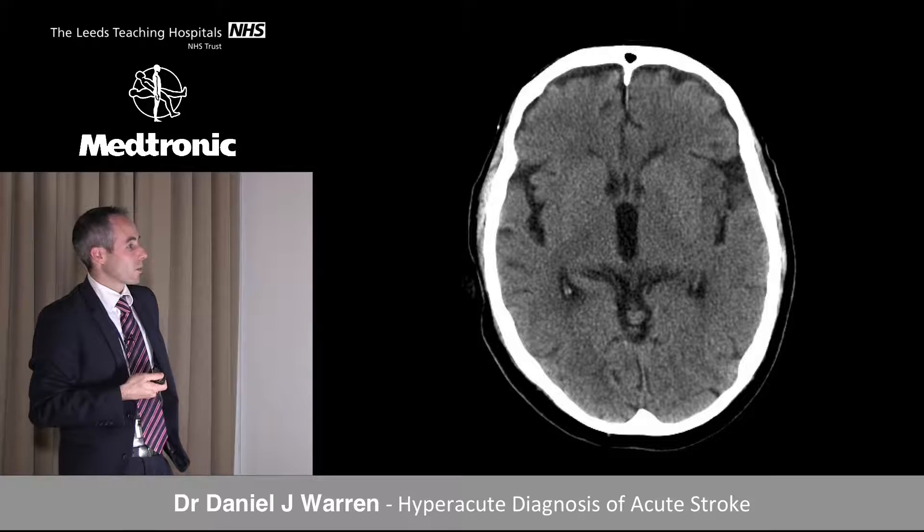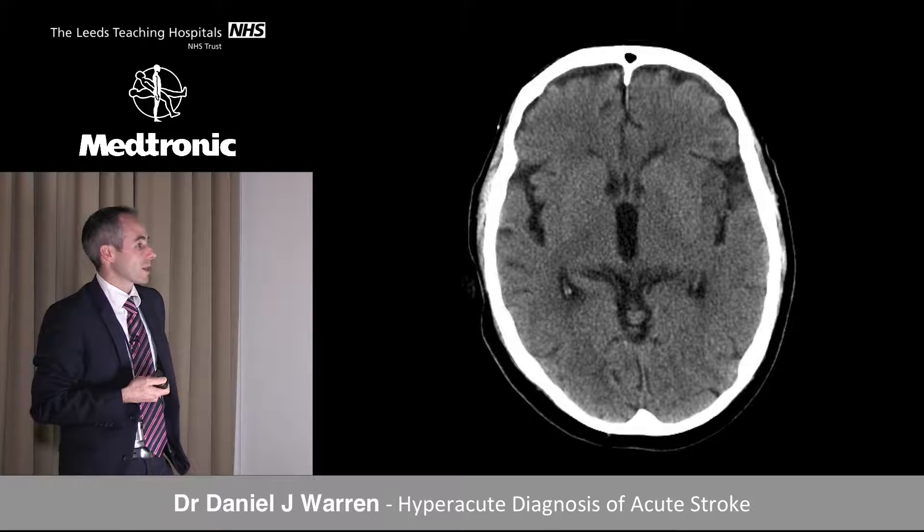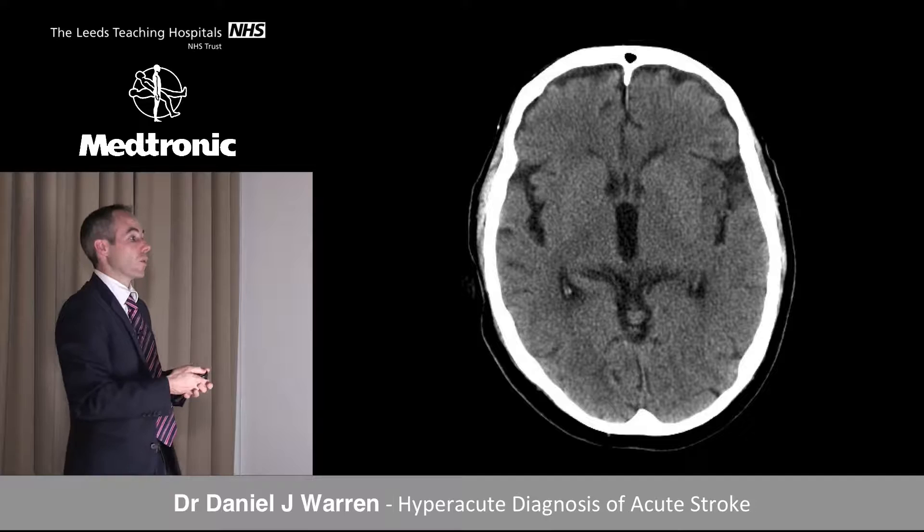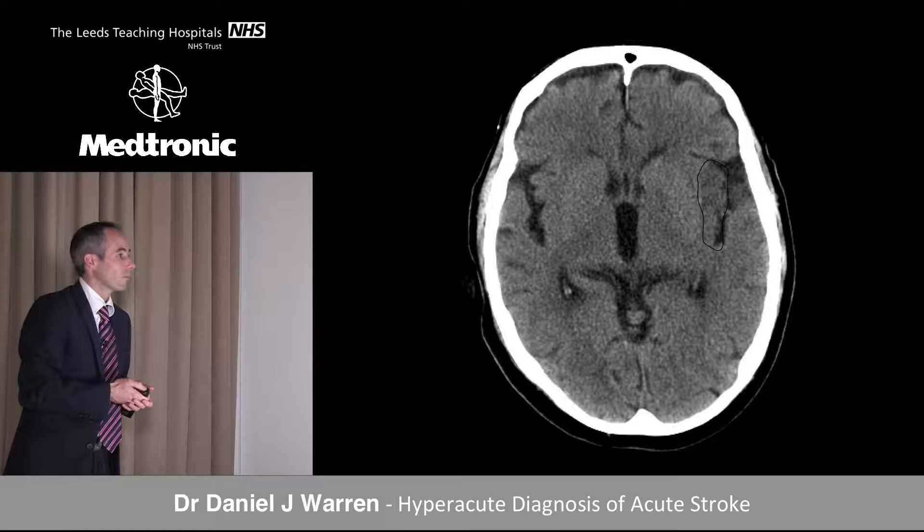Here we can see the caudate and the lenticular nucleus. Coming laterally we reach the insular cortex. The good thing about neuroimaging is there's often a comparator — comparing to the other side, we can see bright cortex on the normal side. Here it's lost. This is the insular ribbon sign.